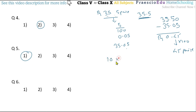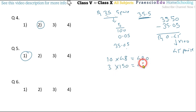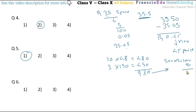Question number six: Anita purchased 10 kg of rice at rupees 48 per kg and 3 kg of tur dal at rupees 150 per kg. She gave two notes of rupees 500. Rice cost: 48 multiplied by 10 equals 480. Dal cost: 150 multiplied by 3 equals 450. Total purchase: 480 plus 450 equals 930. She gave 1000 rupees, so 1000 minus 930 equals rupees 70 back. This is option number four.